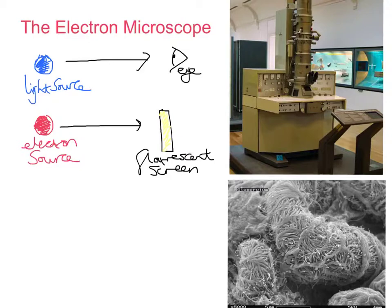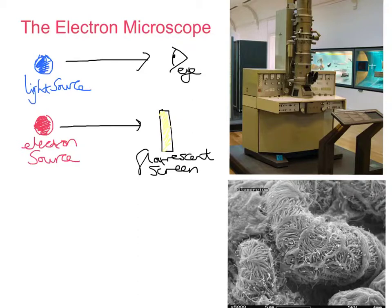The electron microscope, unlike the light or optical microscope, uses a beam of electrons instead of light, produced by an electron gun. The electron microscope consists of a number of magnetic condensers and magnetic projectors to direct that electron beam onto the fluorescent screen, whereas an optical microscope would have a condenser lens, objective, and eyepiece lens. Electron beams have wavelengths much shorter than visible light, so the electron microscope has a much greater resolving power than a light microscope.